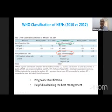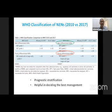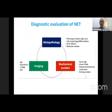We have a WHO classification of neuroendocrine neoplasms, and in 2017 the classification changed from the previous one given in 2010. Grade three tumors were earlier labeled as neuroendocrine carcinoma because of the high Ki-67 index, but it was found that there is a subset of patients who can have a high Ki-67 yet still behave in a better manner — they are well-differentiated tumors. This has more prognostic implications and helps decide about treatment.